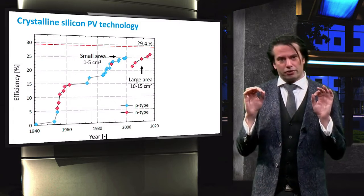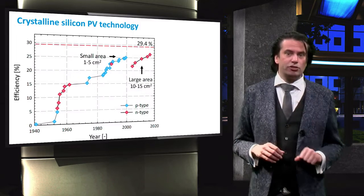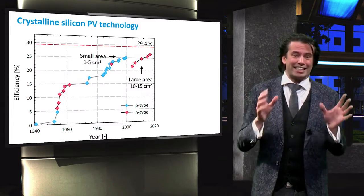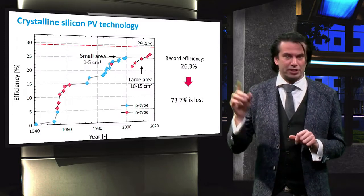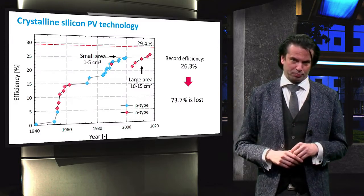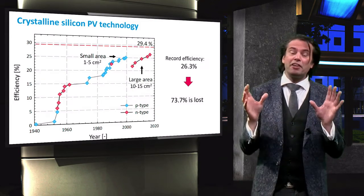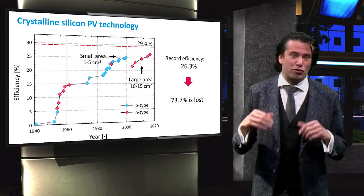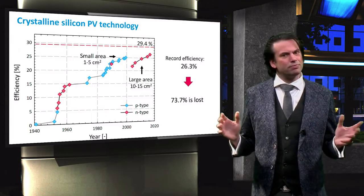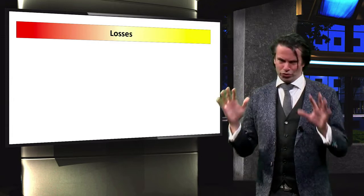The current record efficiency, as of December 2016, of single junction crystalline silicon solar cells is set at 26.3% by the Kaneka Corporation. This still means, however, that 73.7% of the power incident on a solar cell is lost. Let's take a look at these losses.